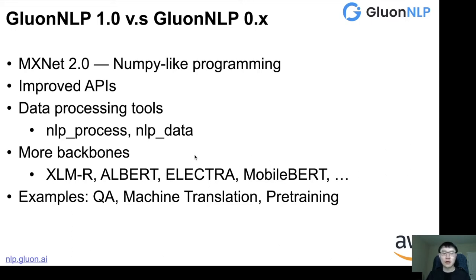We also found that NLP is not only related to neural networks — sometimes there are other techniques, for example subword learning and data cleaning. So we offer data processing tools called NLP Process to help you run common processing pipelines. And to help people reproduce state-of-the-art pretraining models, we have NLP Data, which you can use to fetch large corpora for pretraining. In GluonNLP 1.0, we have more backbones including XLM-RoBERTa, ALBERT, ELECTRA, and MobileBERT. We also offer a bunch of examples to teach you how to use this package.